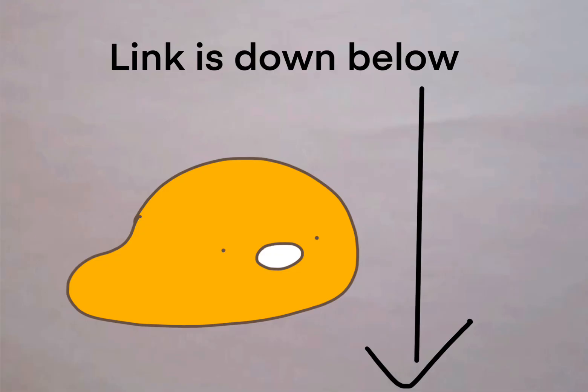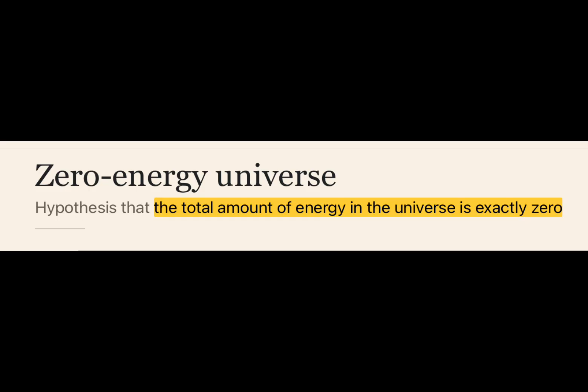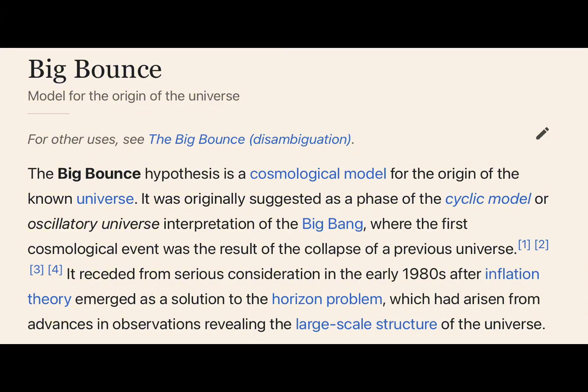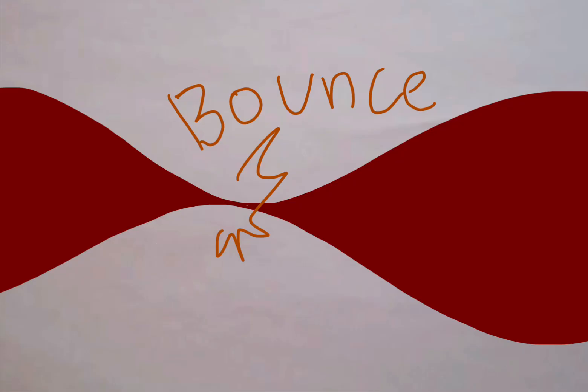If you want to read about them, I have links in the description. To summarize: the zero energy universe theory states that the total energy in the universe is exactly zero, with positive energy from matter perfectly balanced by negative energy from gravity. The big bounce theory states that the universe collapsed after its expansion, and the energy we have is the result of a previous universe collapsing in on itself and becoming the singularity that sparked the big bang.